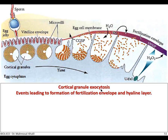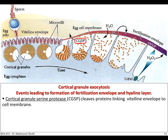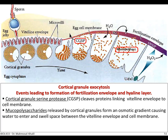What are the events of cortical granule exocytosis? The first event is that cortical granule serine proteases cleave the protein linking the vitelline envelope to the cell membrane, separating the two. A new space is generated called the perivitelline space. Soon after, many mucopolysaccharides are released from the cortical granules. These mucopolysaccharides create an osmotic gradient, causing water to enter and fill the space between the vitelline membrane and the cell membrane, enlarging the perivitelline space.